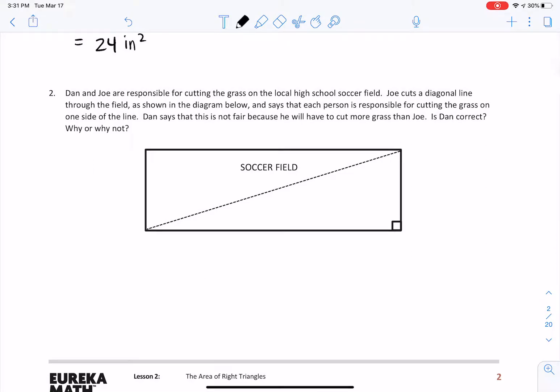Question number two. Dan and Joe are responsible for cutting the grass on the local high school soccer field. Joe cuts a diagonal line through the field, as shown on the diagram below, and says that each person is responsible for cutting the grass on one side of the line. Dan says that this is not fair, because he will have to cut more grass than Joe. Is Dan correct? Is it fair? Is it not fair?